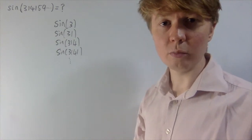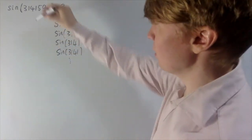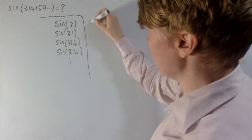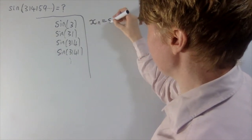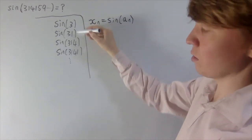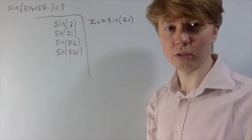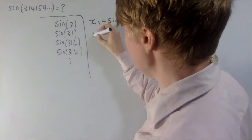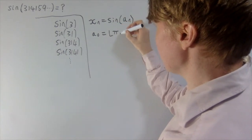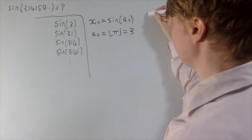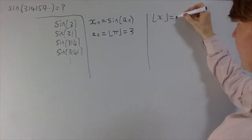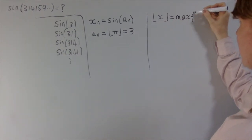Before we can calculate this limit, we need to find a nice way of expressing the nth term in this sequence. Let's say the nth term is xₙ = sin(aₙ), where aₙ captures the sequence 3, 31, 314, 3141, and so on. We know that a₀, the zeroth term, equals 3, which is also equal to the floor function of pi. The floor function, for any real number x, is the largest integer less than or equal to x.